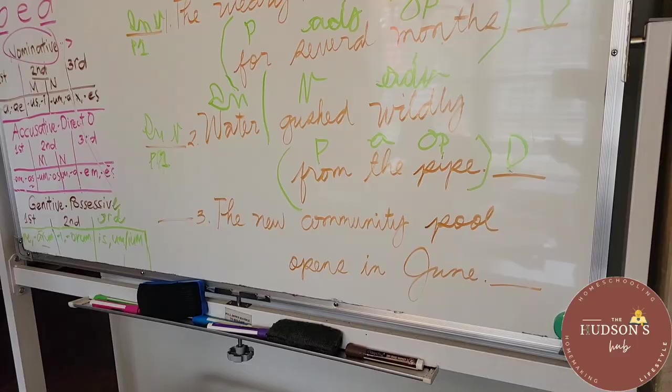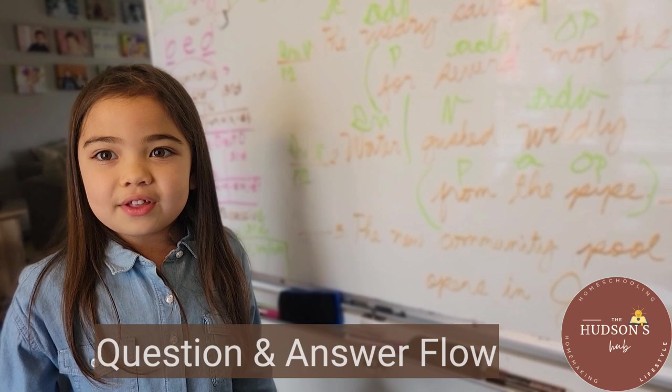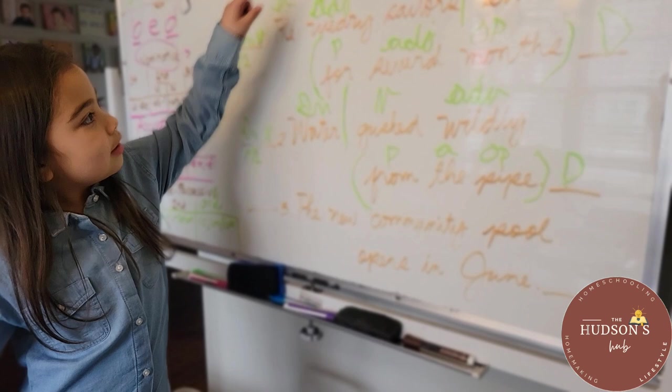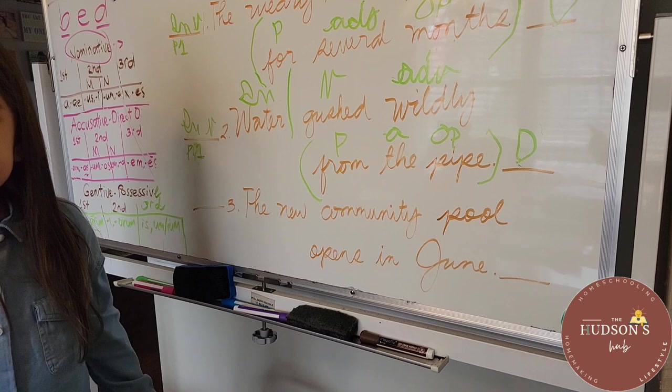Today I am going to show you how to classify words with the question and answer flow. You have already classified sentences one and two. What's left is sentence three. Can you read it to our friends? The new community pool opens in June.